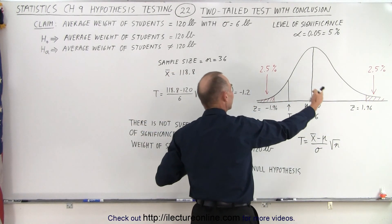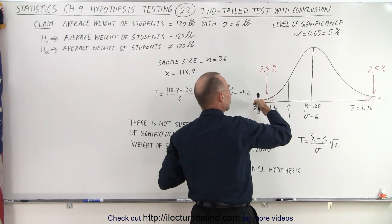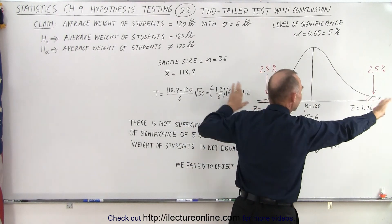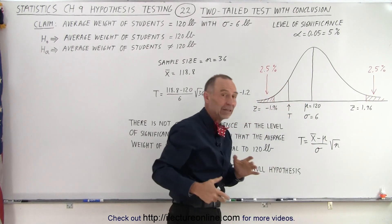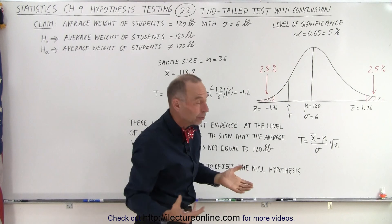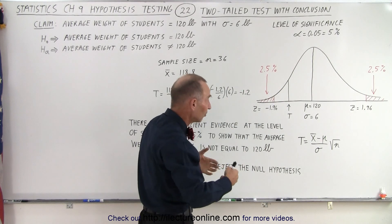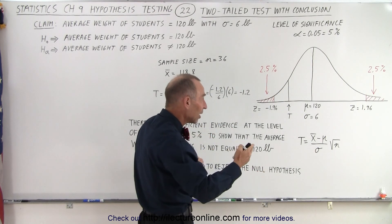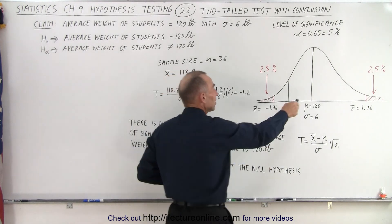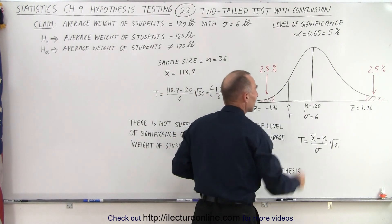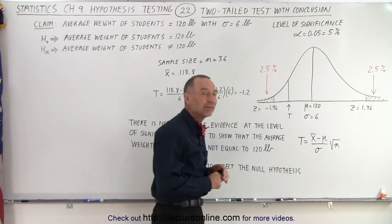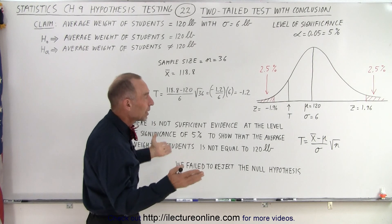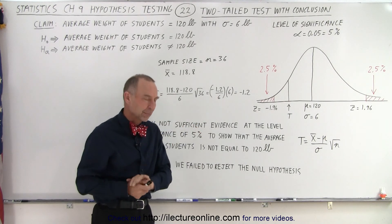We want to see if the average is less than 120 pounds or more than 120 pounds. Does it deviate enough when we take a small sample of students and check out that sample? Does it tell us that we're deviating enough from the mean of the population in order to claim that we can reject the initial claim?